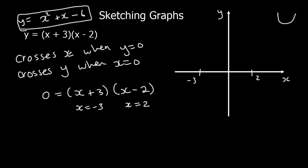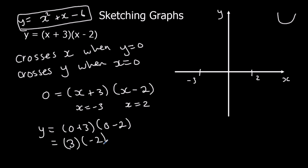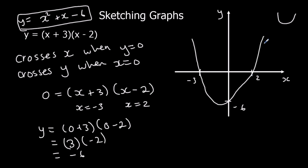Now crosses y when x is 0. So we substitute in 0 for x. We get 0 plus 3 times 0 minus 2, which is 3 times negative 2, which is negative 6. So it's going to cross at negative 6. Then all we've got to do is get the shape right. So we get the points where it crosses the x-axis, where it crosses the y-axis, and we get the shape right — that's all we need for a good sketch.